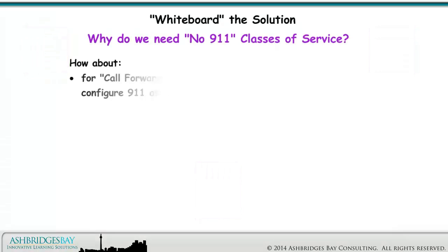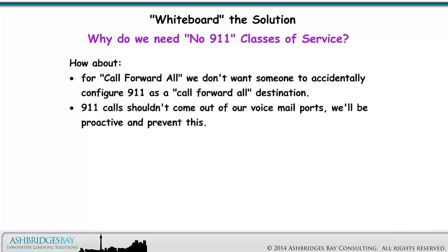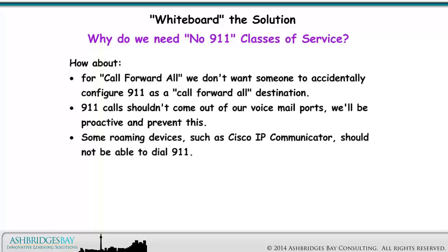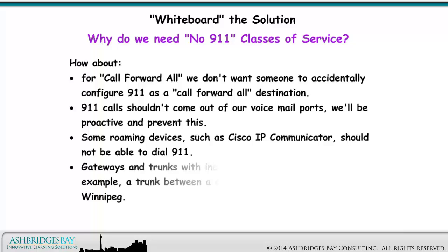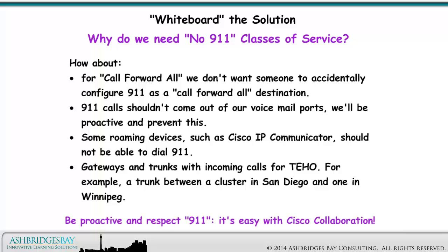For call forward all, we don't want someone to accidentally configure 911 as a call forward all destination. 911 calls shouldn't come out of our voicemail ports — we'll be proactive and prevent this. Some roaming devices, such as Cisco IP Communicator, should not be able to dial 911. Gateways and trunks with incoming calls for TAHO — for example, a trunk between a cluster in San Diego and one in Winnipeg. Be proactive and respect 911 — it's easy with Cisco collaboration.